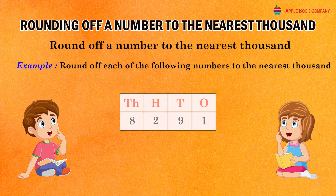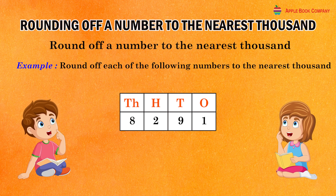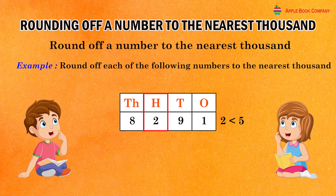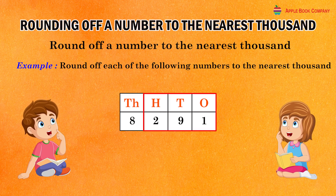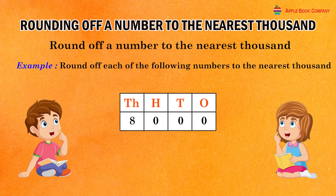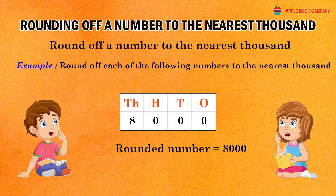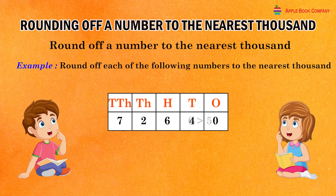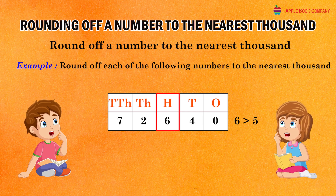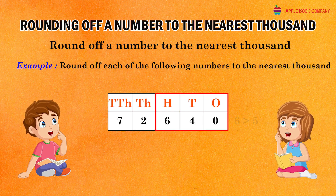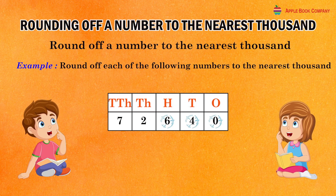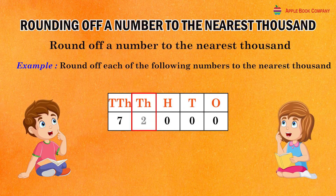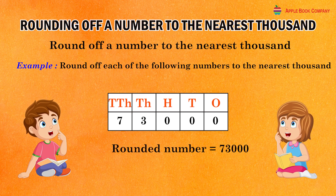In the given number 8291, the hundred's digit is two which is less than five. So, replace each one of the hundreds, tens and ones digits by zero and keep the other digits as they are. Rounded number: 8000. In the given number 72640, the hundred's digit is six which is greater than five. Replace the hundreds, tens and ones digits by zero and increase the thousands digit by one. Rounded number: 73000.